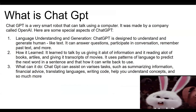It was made by a company called OpenAI. Here are some special aspects of ChatGPT. First, language understanding and generation — ChatGPT is designed to understand and generate human-like text. It can answer questions, participate in conversations, and remember past text, and more.